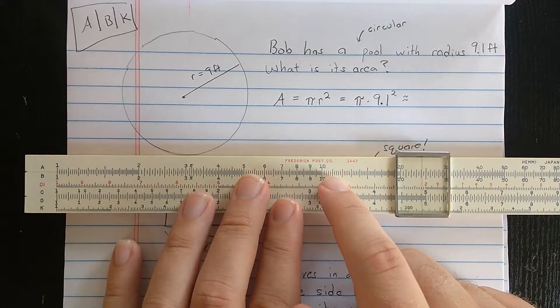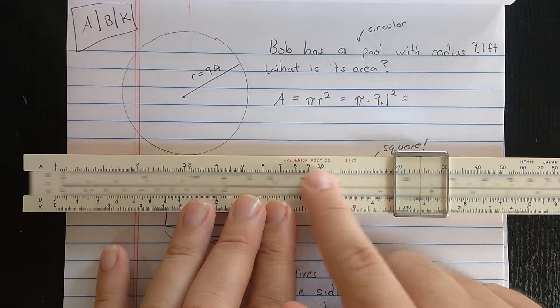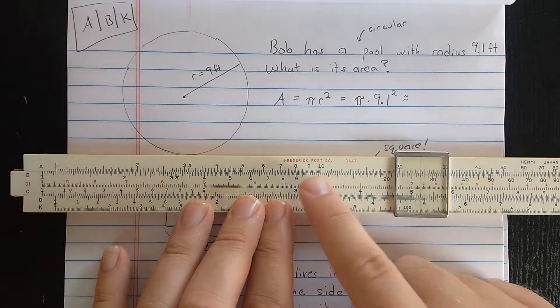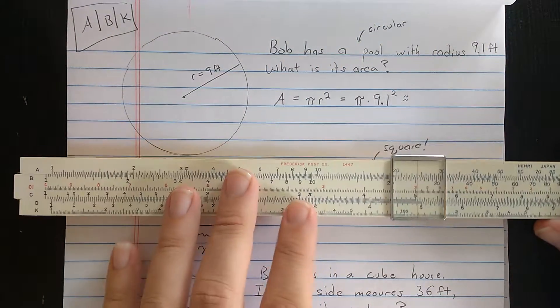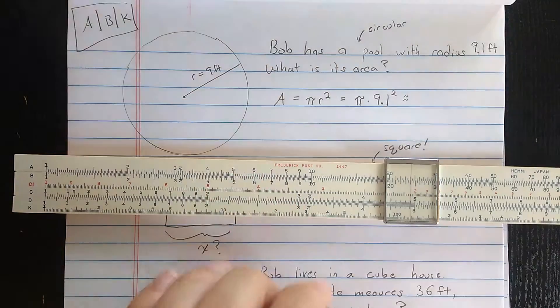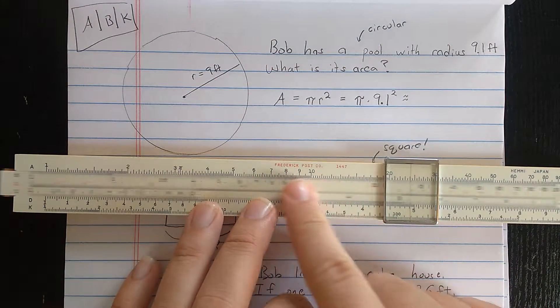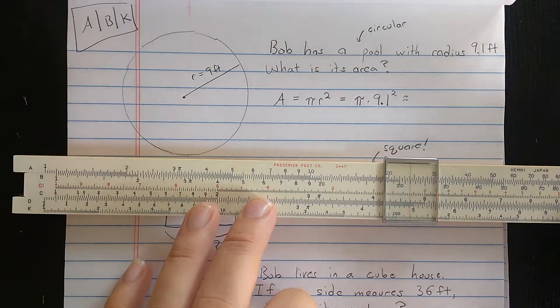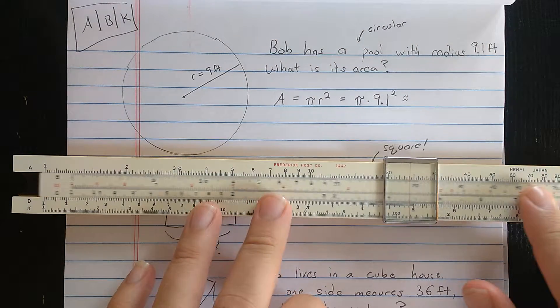Now, since they're just small copies of the C scale, you can use the A and the B scale for multiplying and dividing in the same method as the first video from this series. That's another trick. So A and B can multiply and divide in the same way as C and D can multiply and divide.